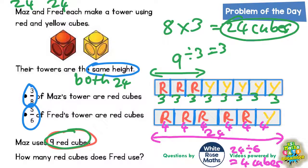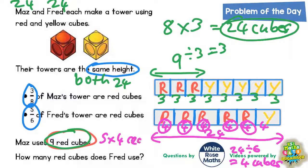And now we're ready to find our final answer. It says how many red cubes does Fred use? Well he's actually got five lots of 4 red cubes. Five lots of four is 20. Therefore Fred uses 20 red cubes. And the final answer is 20 red cubes, and 4 yellow cubes.